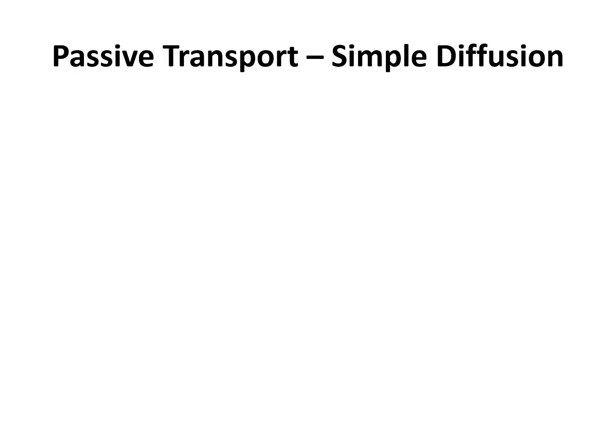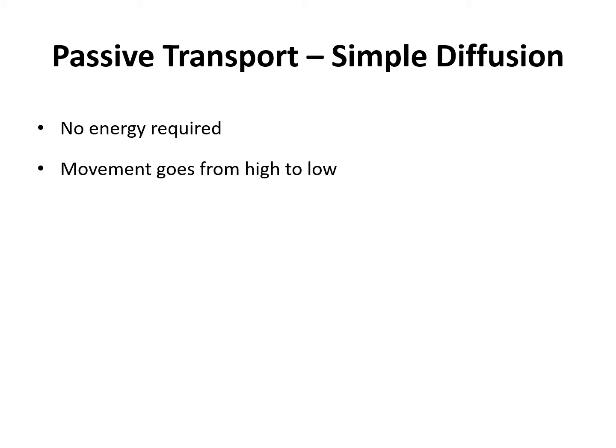One example of transport is passive transport, and the most basic type is simple diffusion. With simple diffusion, no energy is required — the molecules are just moving because of Brownian motion. Another characteristic is that the movement of molecules goes from the area of high concentration to an area of low concentration, and this movement will occur until you reach equilibrium. When you reach equilibrium, you no longer have a concentration gradient.